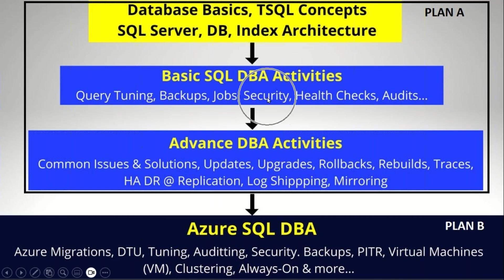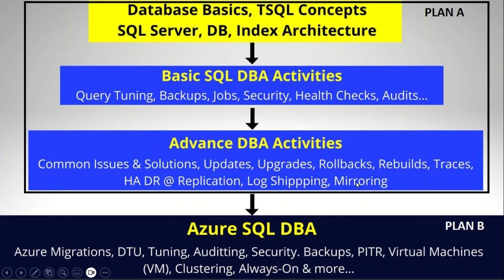Then comes basic DBA activities: tuning, backups, jobs, security, and health checks. Then advanced DBA activities: common issues, solutions, updates, migrations, rollbacks, high availability, and disaster recovery solutions with replication, log shipping, and mirroring. These three modules form Plan A — Level One — the starter program.